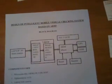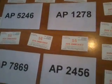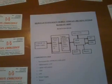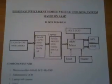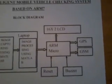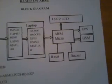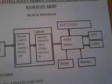The owner can track the vehicle using the number, for example AP 2456. The owner sends the vehicle number, which is linked to one vehicle in the database, and the latitude and longitude values coming from the GPS are sent to the owner.